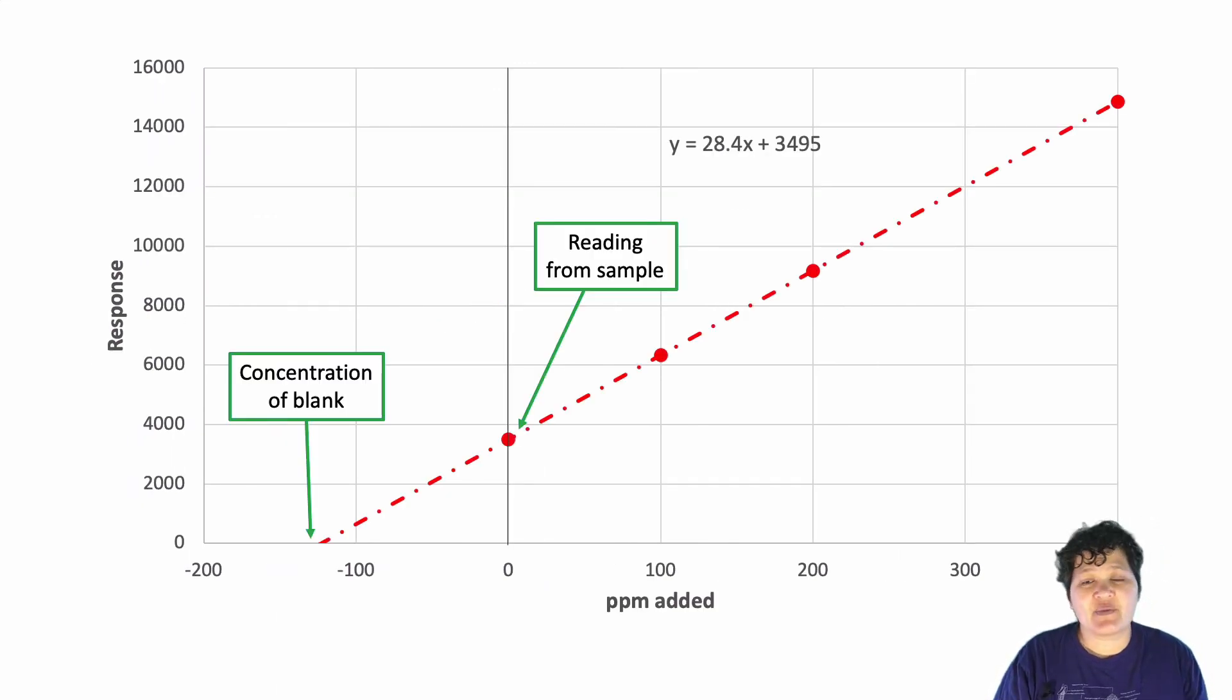One way to do that is to extend the line past the y-axis and find the x-intercept. Because the x-intercept is basically going to tell us what the concentration of a blank would probably be. And the difference between the x-intercept and the y-axis is going to tell us what the concentration of our sample is. So in this case, our x-intercept is around minus 125. So our sample concentration is going to be about 125.